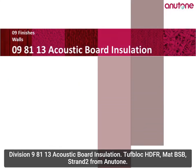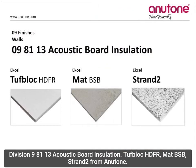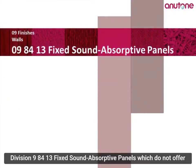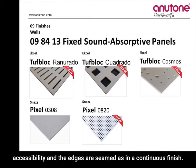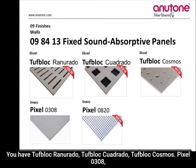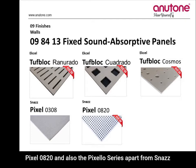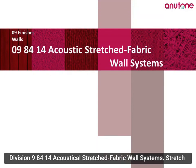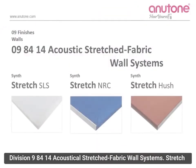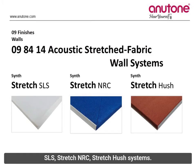Division 9, 8113 — Acoustic Board Insulation: Tublok HDFR, Matte BSB, Strand 2 from Anutone. Division 9, 8413 — Fixed Sound Absorptive Panels, which do not offer accessibility and whose edges are seamed as a continuous finish: Tublok Ranurado, Tublok Quadrado, Tublok Cosmos, Pixel 0308, Pixel 0820, and also the Pixelo series, apart from Snaz Cosmos and Snaz Ellipse. Division 9, 8414 — Acoustical Stretch Fabric Wall Systems: Stretch SLS, Stretch NRC, and Stretch Hush Systems.